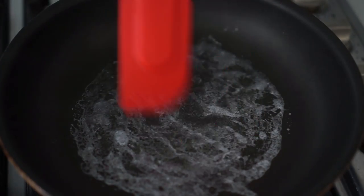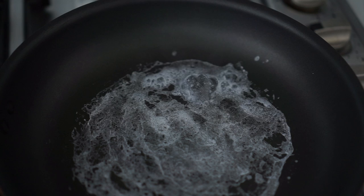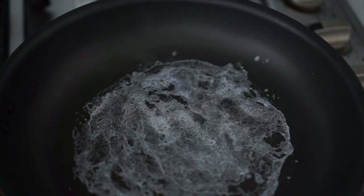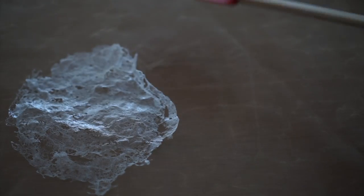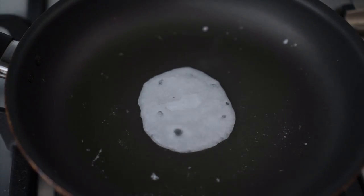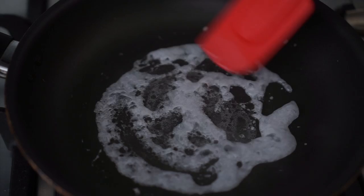The paper will start to curl and bubble. Carefully remove the paper with tongs or by hand and let it cool on a piece of parchment paper. Repeat this process with all of the wafer paper feathers.